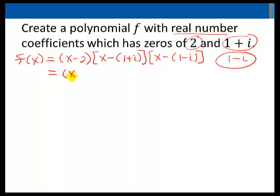So we have x minus 2 times x minus 1 minus i times x minus 1 plus i.